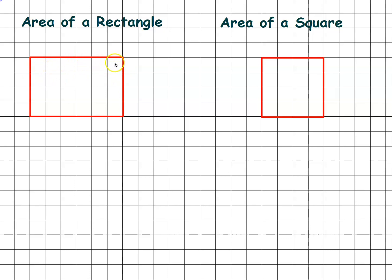You go one, two, three, four, five, six, etc. And eventually you get down to the end and find out that there are 24 squares inside of that. So you could say the area is 24 centimeters squared.